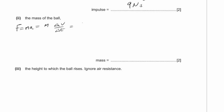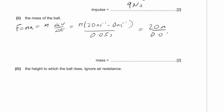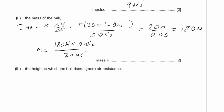Putting in the values: 180 = m × (20 − 0) / 0.05. Rearranging: m = 180 × 0.05 / 20, which gives a mass of 0.45 kilograms. Remember the units.